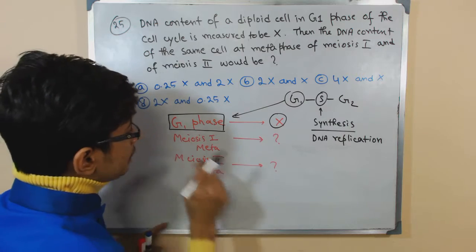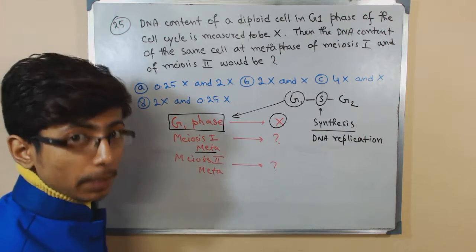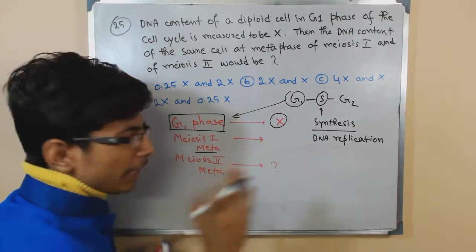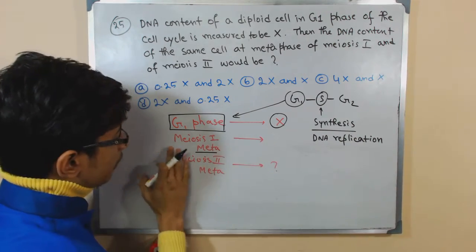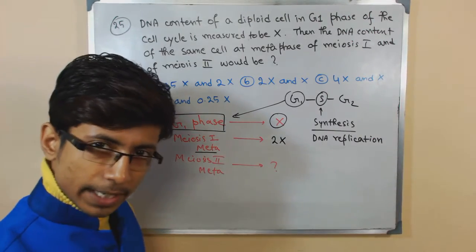So during any metaphase condition, the number of chromosome present in G1 will be doubled. So the number in meiosis 1 metaphase will be 2X.